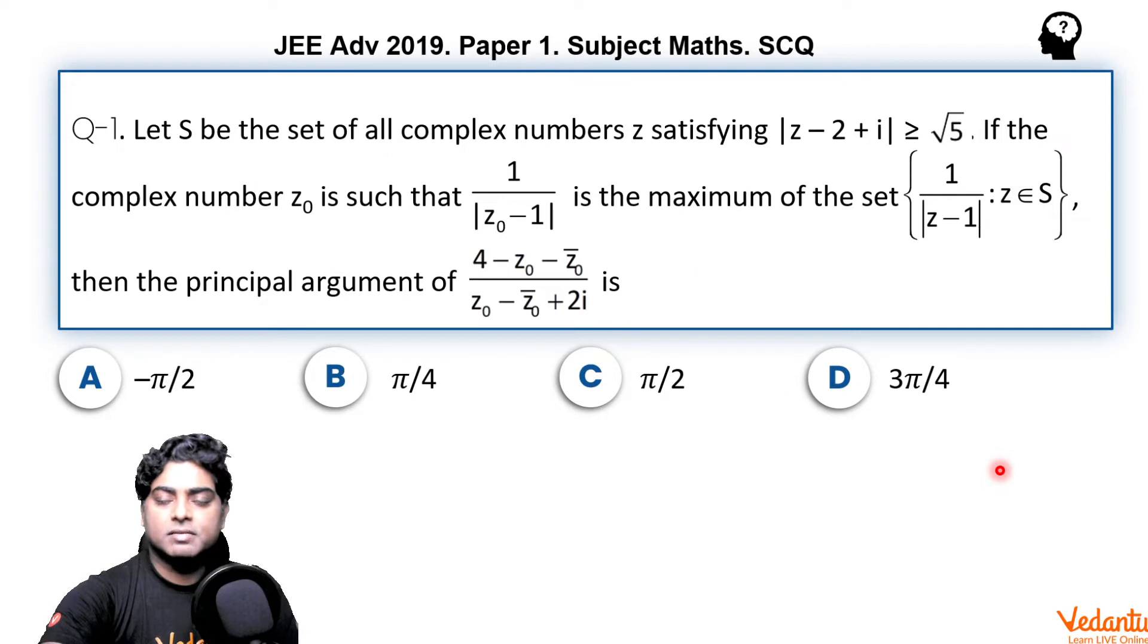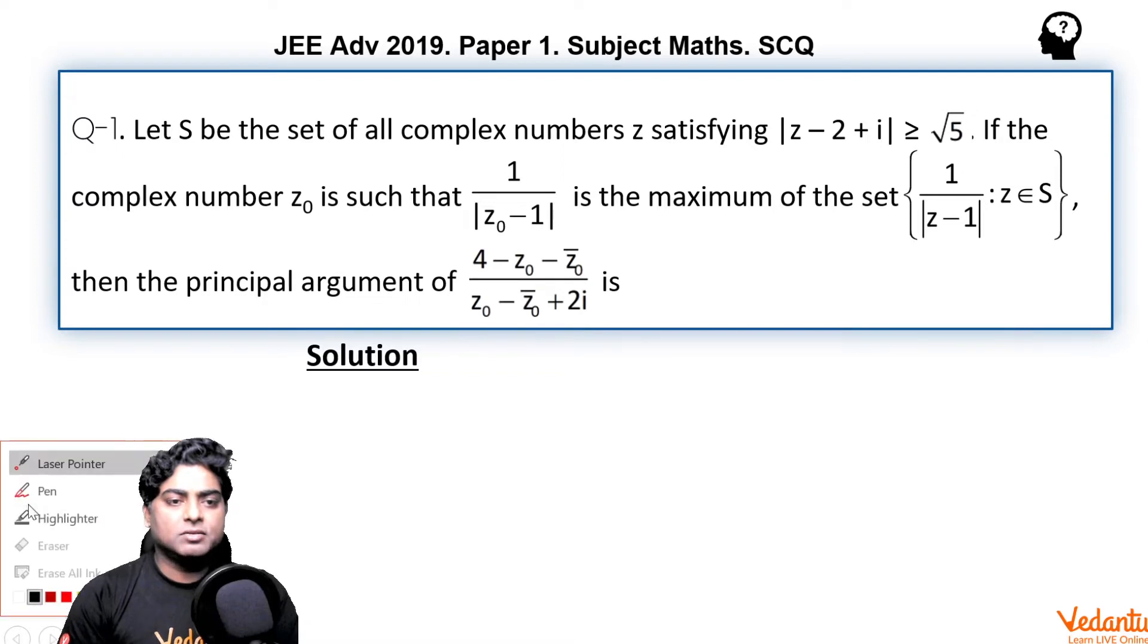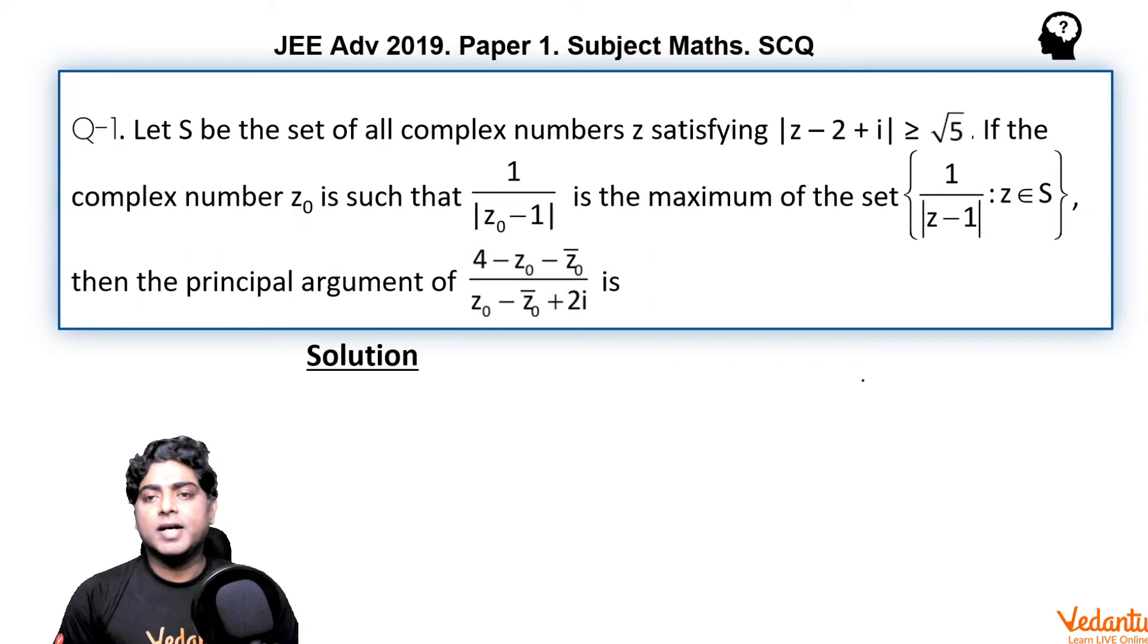We should first try to identify the position of z0. As they are saying that 1 upon mod of z0 minus 1 is maximum, means mod of z0 minus 1 is minimum. Means z0 should be situated at the minimum distance from the point 1 comma 0 because mod of z0 minus 1 denotes distance of z0 from 1 comma 0.